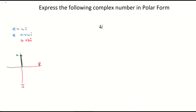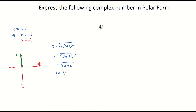Let's confirm that using the modulus formula: R equals square root of a squared plus b squared. Filling in, A is 0 squared and B is 4 squared, giving 0 plus 16. The square root of 16 is 4. So we've proved that the radius from the center to point Z is 4 units.